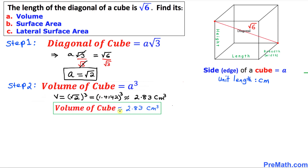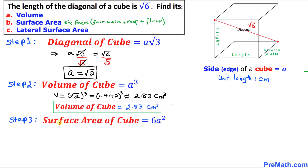Thus the volume of the cube turns out to be approximately 2.83 centimeter cube. In the next step we find the surface area of this cube, and the formula is surface area equal to 6a squared. Here you can see the surface area has six faces — four walls plus roof plus floor. Surface area equals 6 times square root of 2 squared, and since the square and square root cancel each other, we get 6 times 2, which is 12 centimeter square.